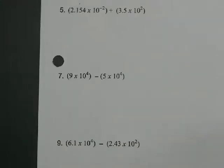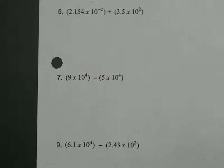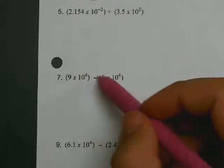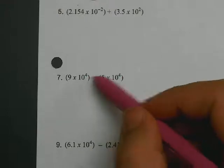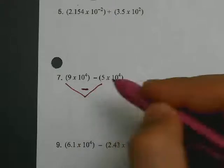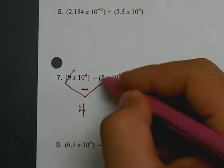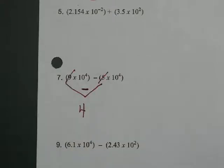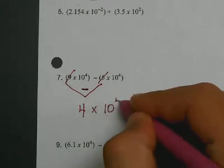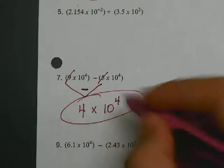So point down here to number 7. Number 7, 9 times 10 to the fourth minus 5 times 10 to the fourth. Well, do you have like exponents? If you do, then subtract the first terms. 9 minus 5 is 4. That takes care of your first terms. Now go to your second terms. Since they're alike, you drop the base and the exponent. That's in scientific notation.